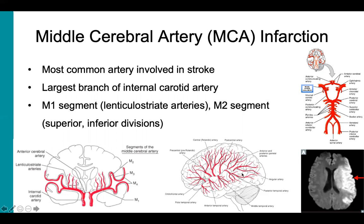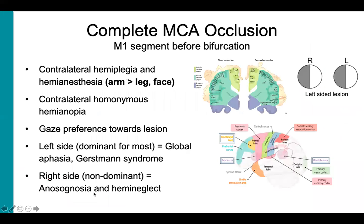The next slide covers a complete middle cerebral artery occlusion, which is a blockage of the proximal M1 segment. Proximal M1 occlusions yield a classic pattern of symptoms. The most obvious and classic deficit is contralateral hemiplegia and hemianesthesia, which is loss of motor and sensory function on the side of the body opposite to the lesion. On the motor and somatosensory homunculus, the MCA covers the face and upper extremity, so we would expect weakness and numbness in those areas. The lower extremity is less affected since this is primarily ACA territory.